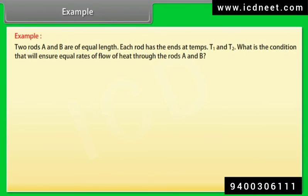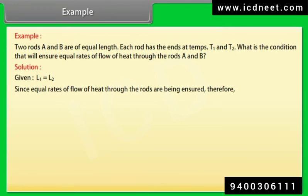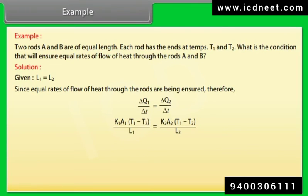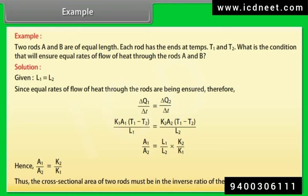Example on thermal conductivity: Two rods A and B are of equal length. Each rod has ends at temperatures T1 and T2. What condition ensures equal rates of flow of heat through both rods? Given L1 equals L2, and equal rates of heat flow, delta Q1 upon delta t equals delta Q2 upon delta t. Solving, A1 by A2 equals K2 by K1. Thus the cross-sectional areas of the two rods must be in the inverse ratio of their thermal conductivities.